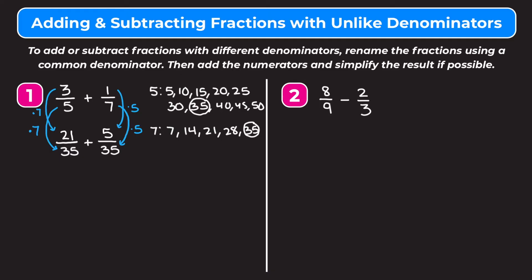So now we have 21 thirty-fifths plus 5 thirty-fifths. Now that we have common denominators, it's really easy — we're just going to add the numerators. 21 plus 5 gives us 26, and we keep the denominator the same, so our denominator is 35. We check if we can simplify, and we cannot because 26 and 35 do not have any common factors. So we get 26 thirty-fifths as our final answer.